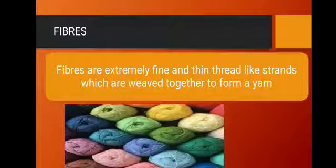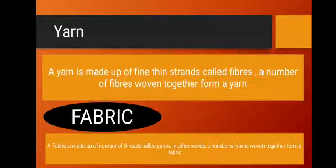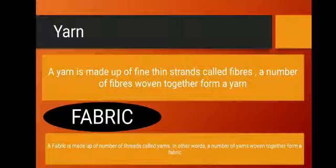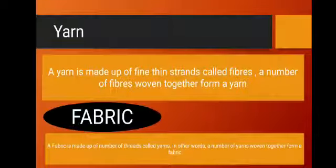Fibers are extremely fine and thin thread-like strands which are woven together to form a yarn. So yarn is made up of fibers. A number of fibers woven together form a yarn. A fabric is made up of a number of threads called yarn — a number of yarns woven together form a fabric. The smallest part is fiber; fibers together make a yarn, and yarns together make a fabric.